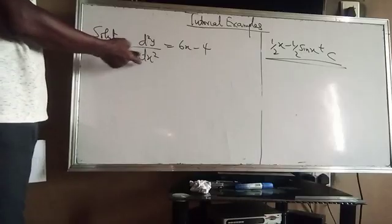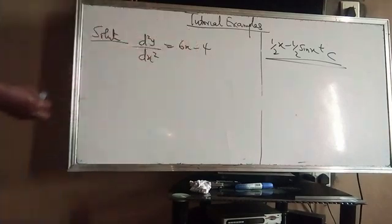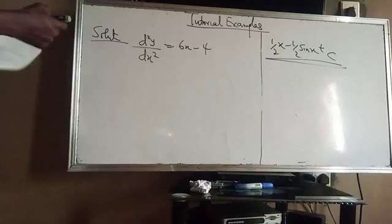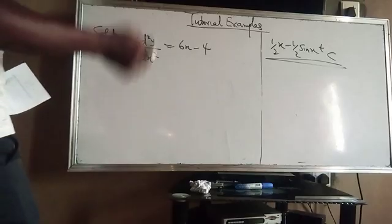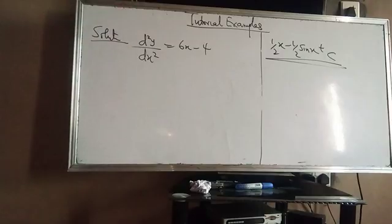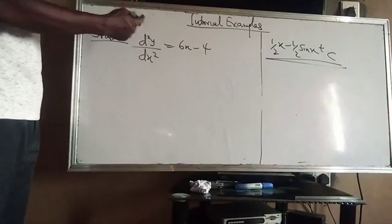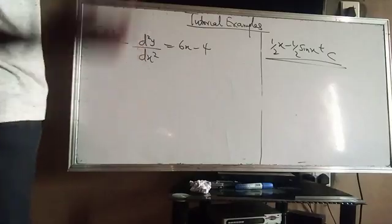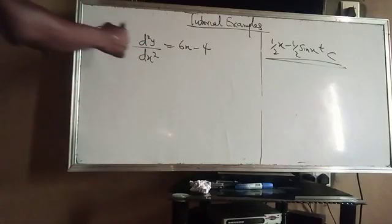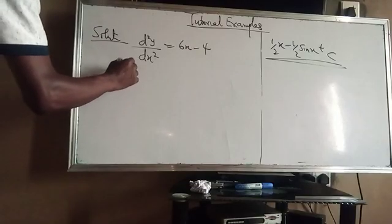When y is differentiated twice the result is 6x − 4. The question says we should find y. To find y, we have to integrate twice. This is a differential value that was differentiated twice, so we integrate twice.